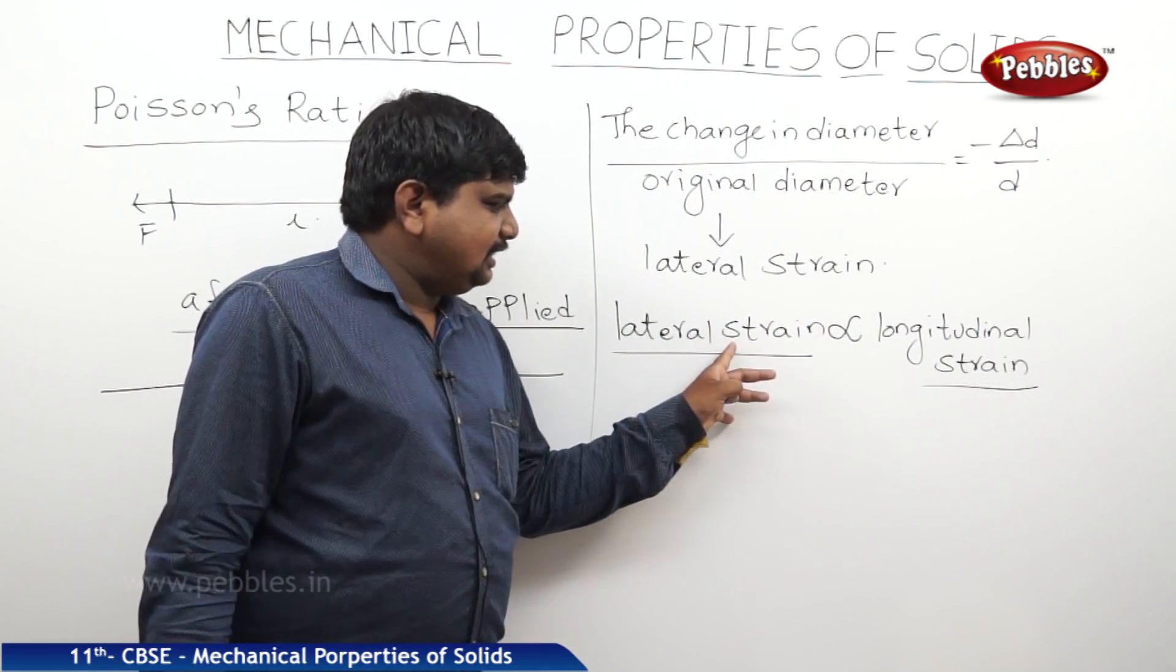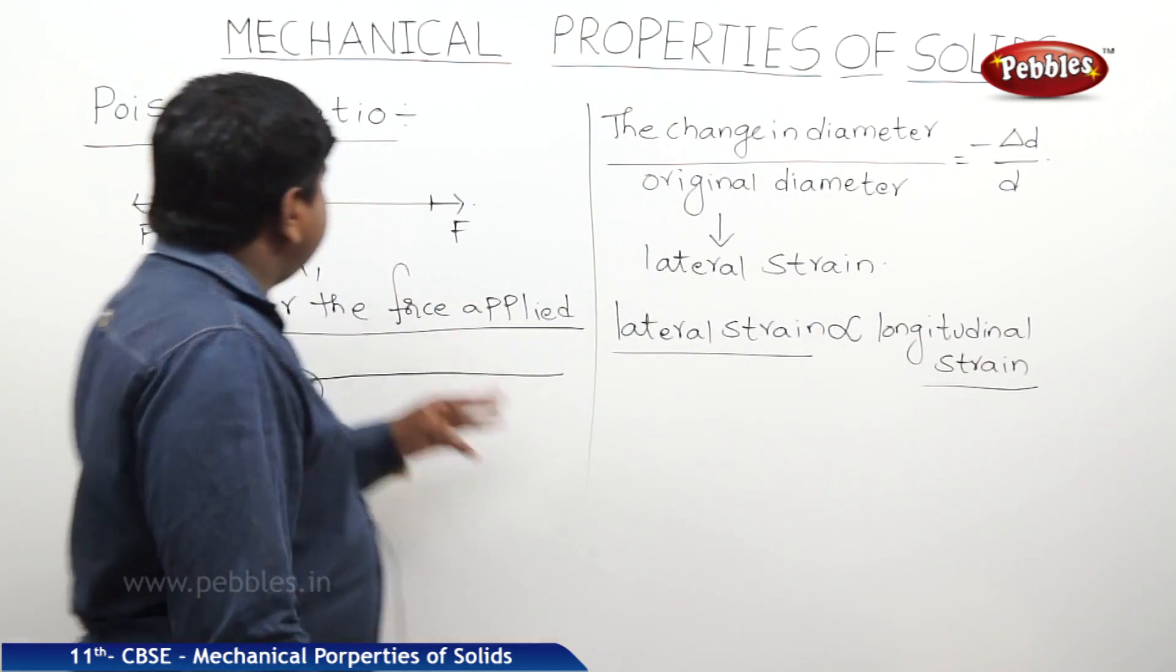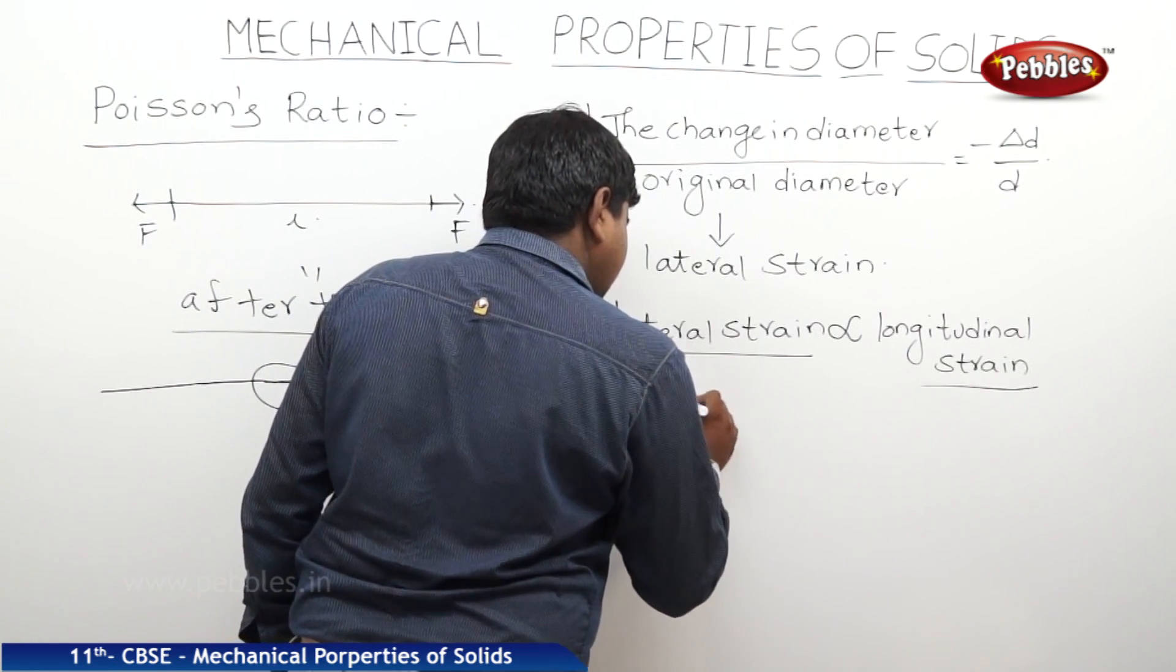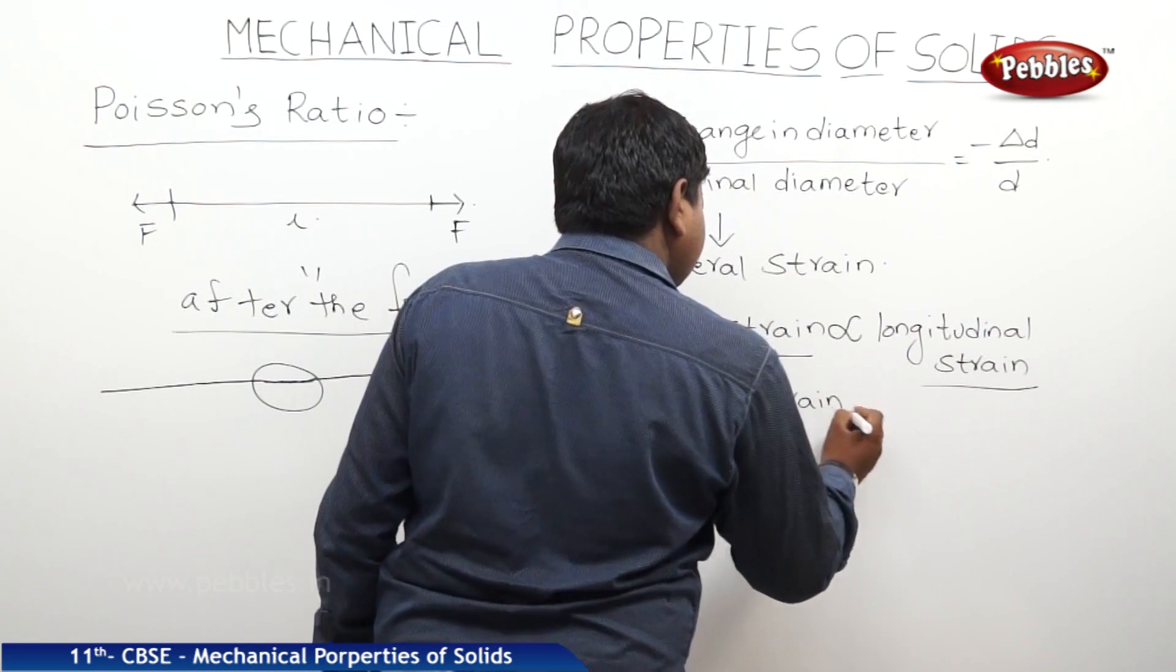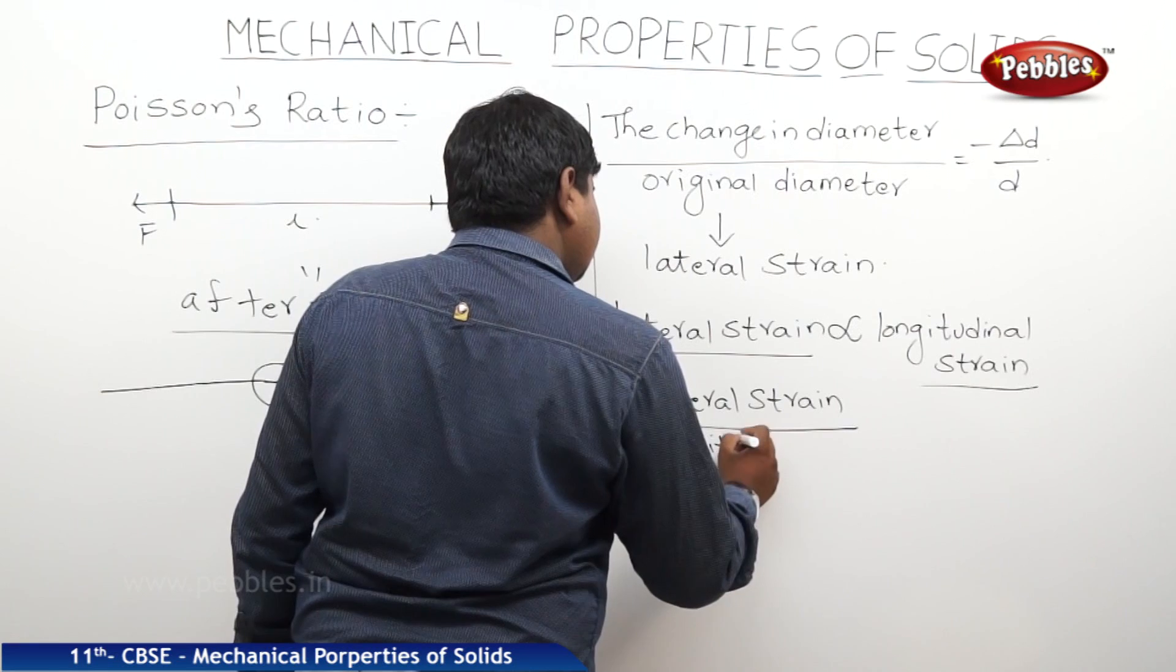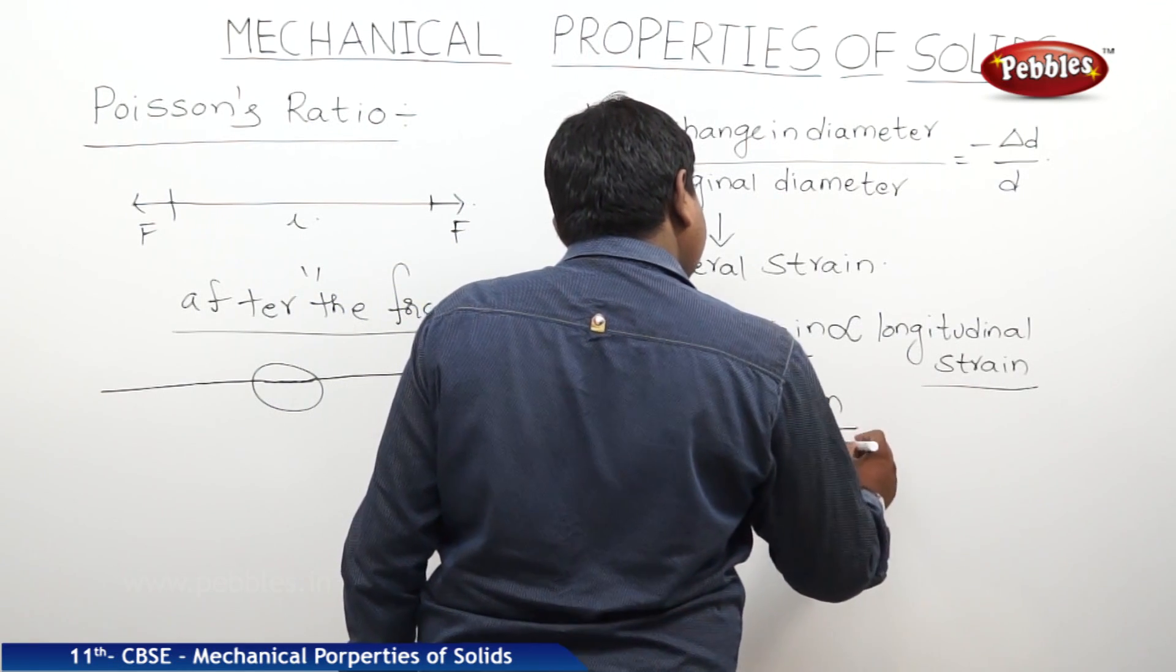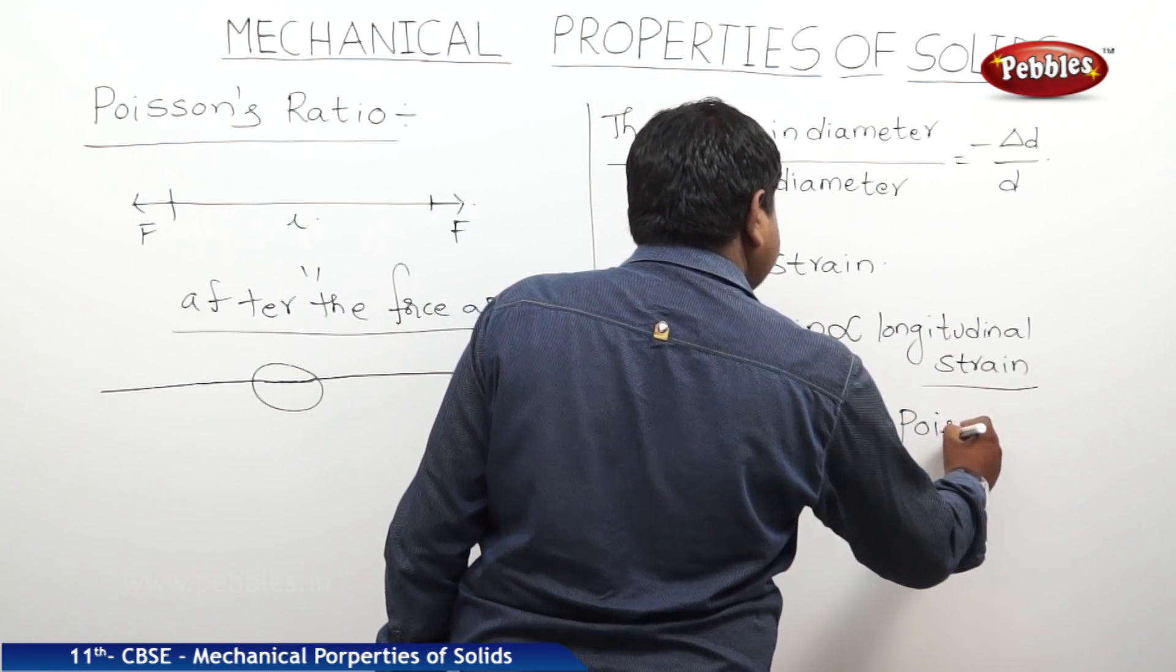The ratio between the lateral strain to the longitudinal strain is called Poisson's ratio. Therefore, lateral strain by longitudinal strain is equal to Poisson's ratio.